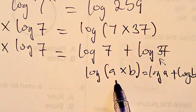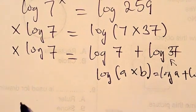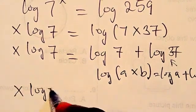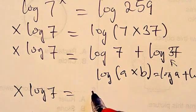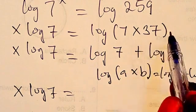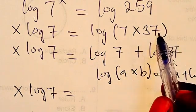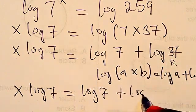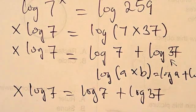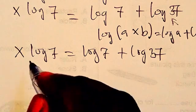So we are going to write this in composite form. We're going to have x log 7 equals, we actually write this one here. This is in composite form and we express it like this: we have log 7 plus log 37.